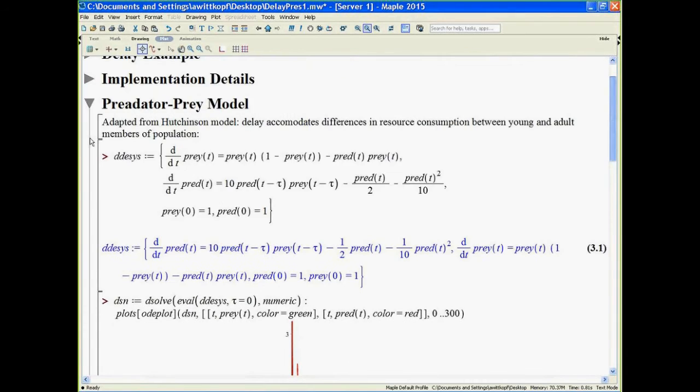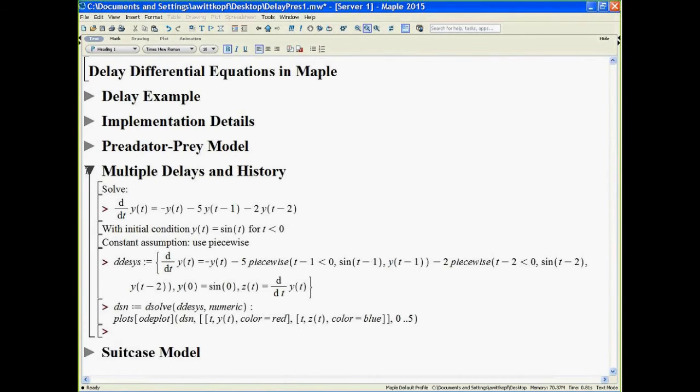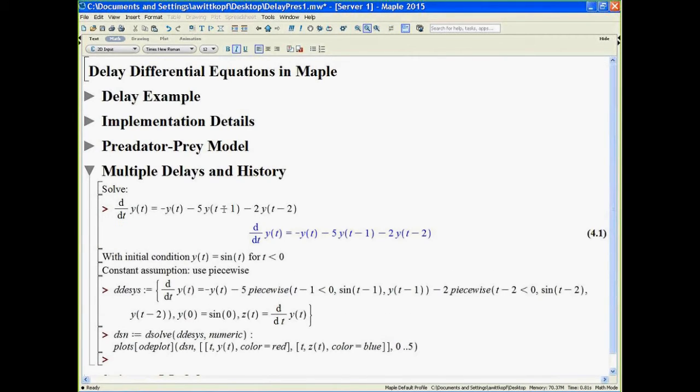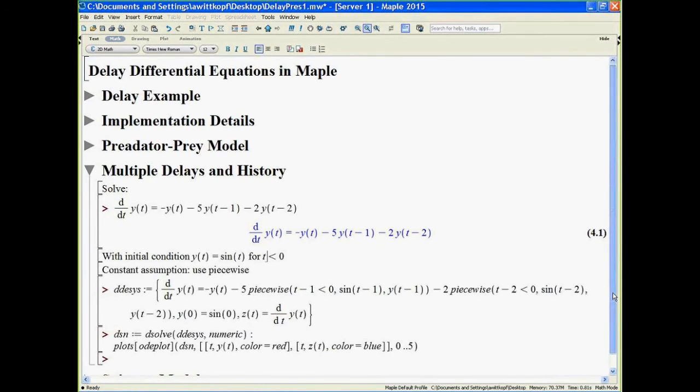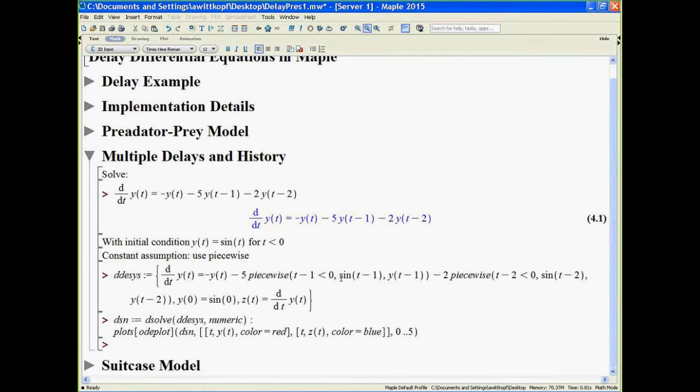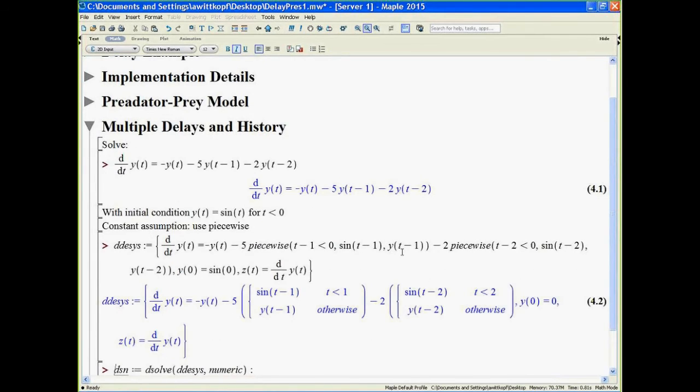The next example shows that multiple delays can be handled by the solver, and also describes how to use delay history. So this is the delay equation we want to solve. It has two delays, a one-second delay and a two-second delay. Now the initial condition we want to apply is that the solution value is sine of t, for any t value less than zero. Now by default, the solver uses a constant assumption. So in order to get variable initial conditions, we can do so by describing them through a piecewise on the delay terms.